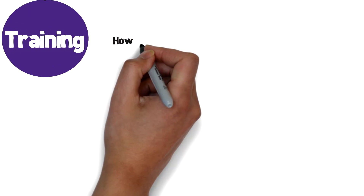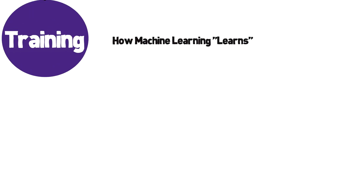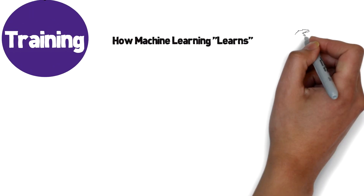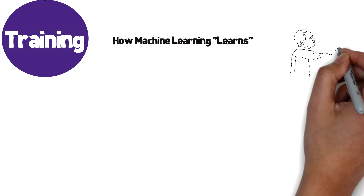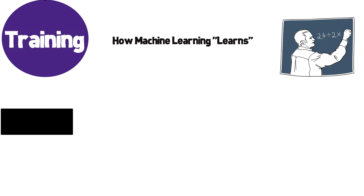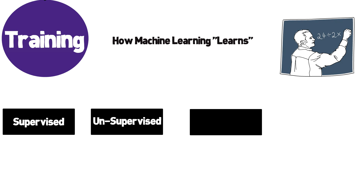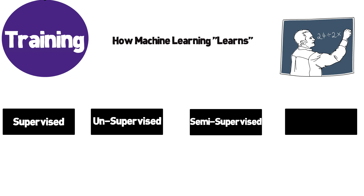By definition, training consists of learning some new piece of information, whether that be by someone teaching you or by experience. That is why an important part of the training process involves how information is going to be learned by the different models. There are different models based on the use case. Four of the most common learning methods include supervised, unsupervised, semi-supervised, and reinforcement training.